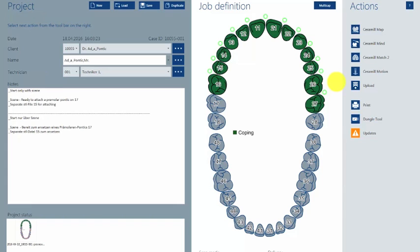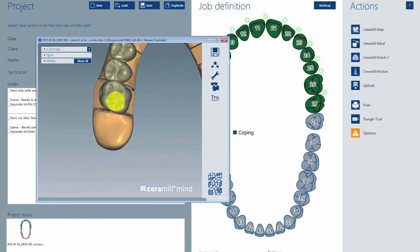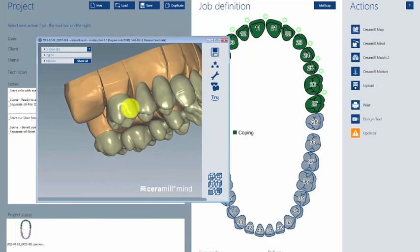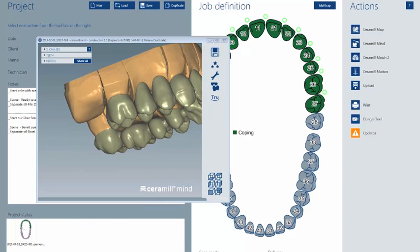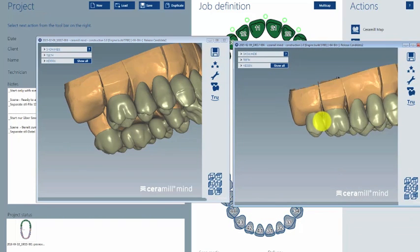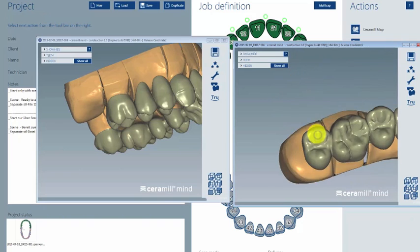Hello together! In this video clip I will show you how to add missing parts to a finished bridge construction. For example, if tooth number 17 is missing and you want to create another part at the 1.7 position, that's what I want to show you in the next few minutes.